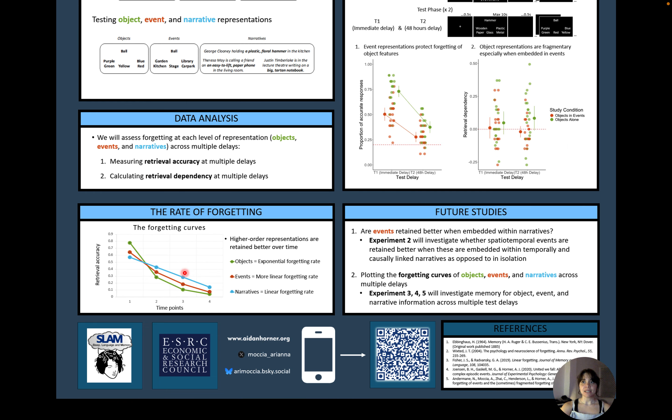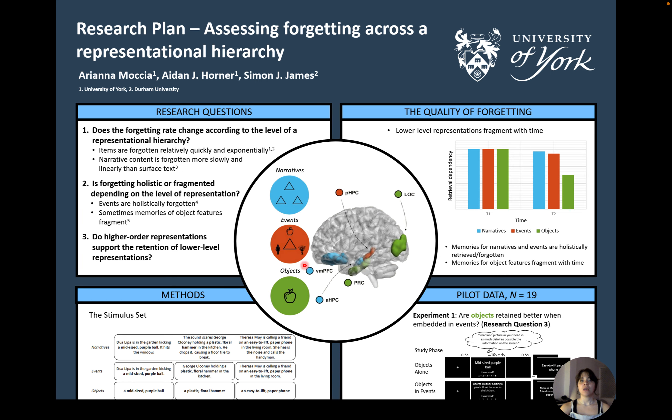For the rate of forgetting, we expect that higher order narrative representations will decay less rapidly and more linearly than lower order object representations, which should decline quickly and more exponentially. For the quality of forgetting, we predict holistic forgetting only for higher level representations. For lower level object representations, we anticipate a significant decline in retrieval dependency over time.